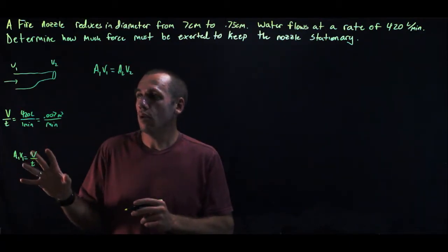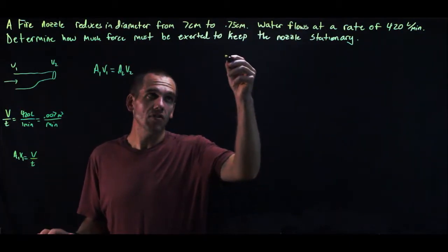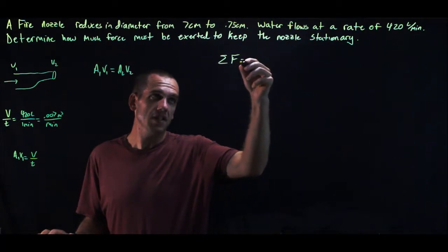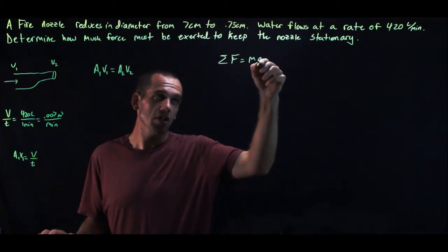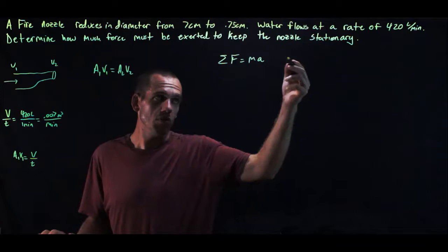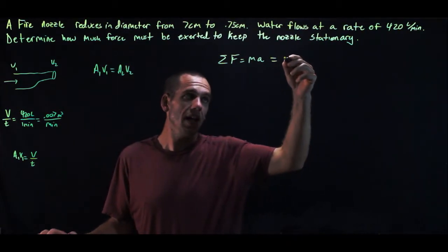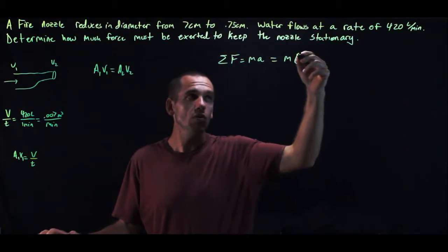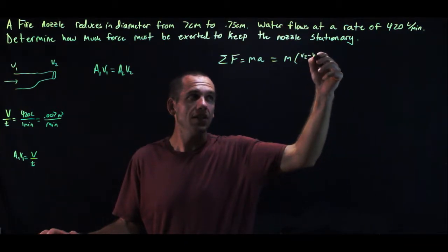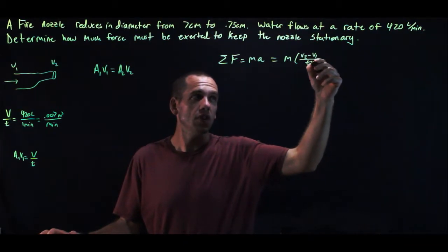So now what we can say is Newton's second law says that net force is equal to mass times acceleration. Acceleration, remember, is just change in velocity over time. So this is equal to mass times V2 minus V1 over T.